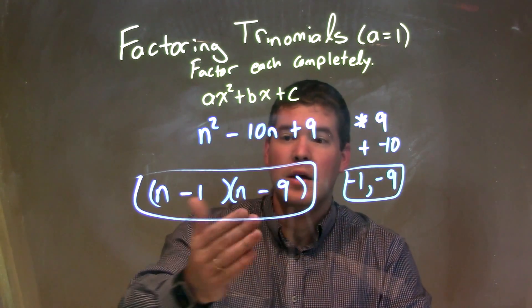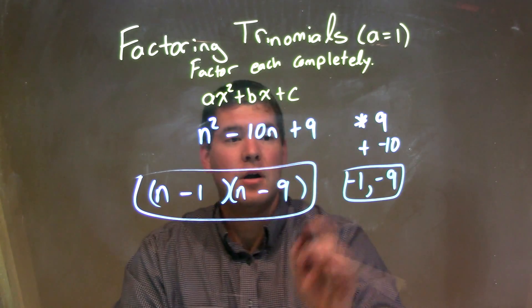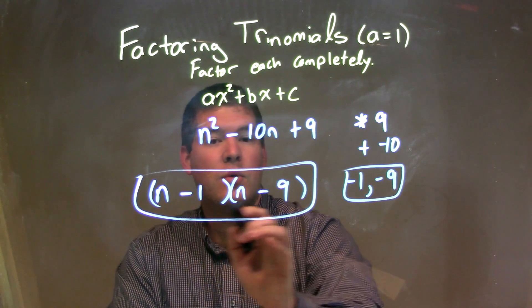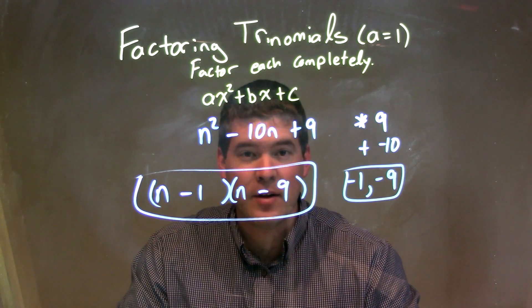So from there, I can translate that into our factored form here of just our two numbers there, n minus 1 times n minus 9, and that is our final answer.